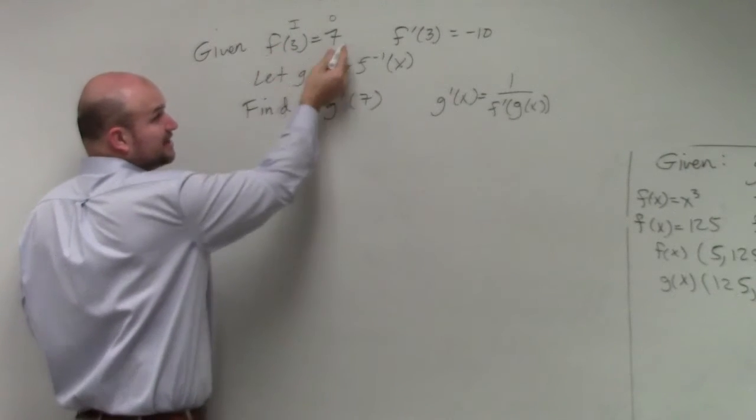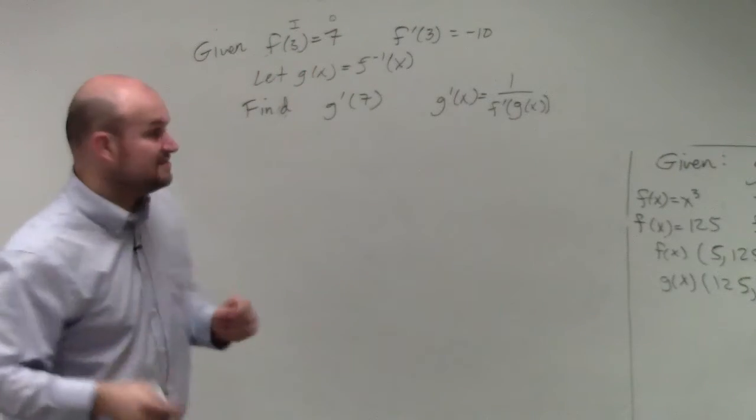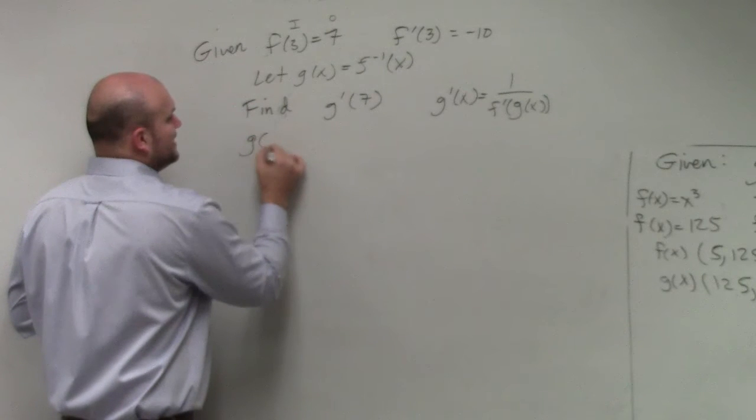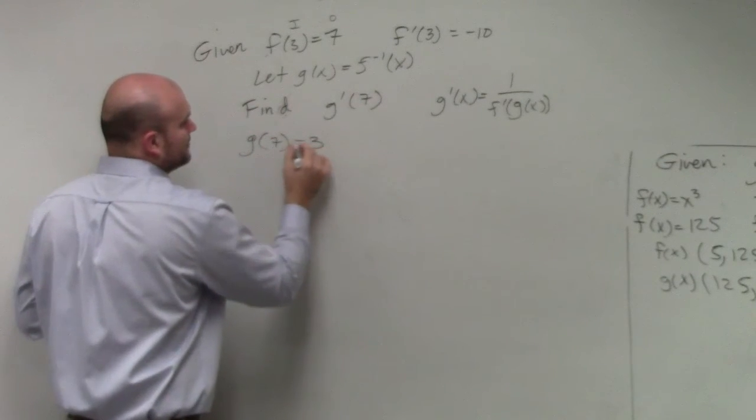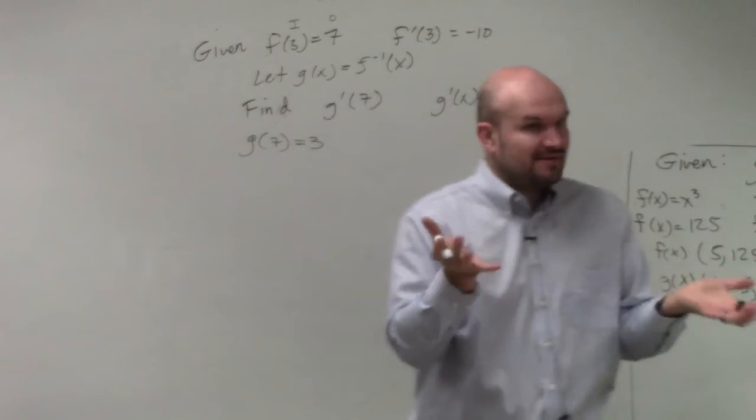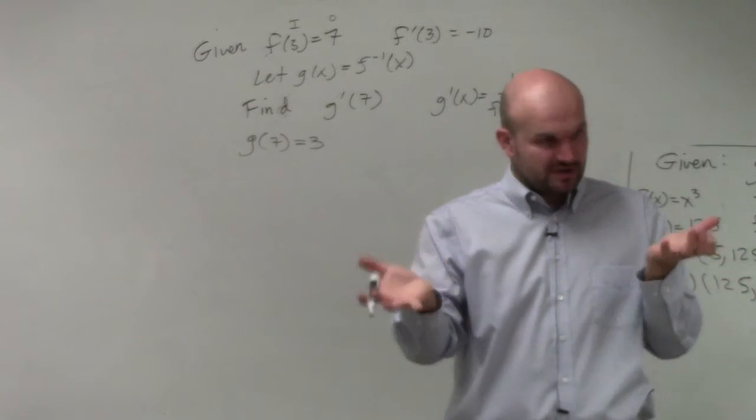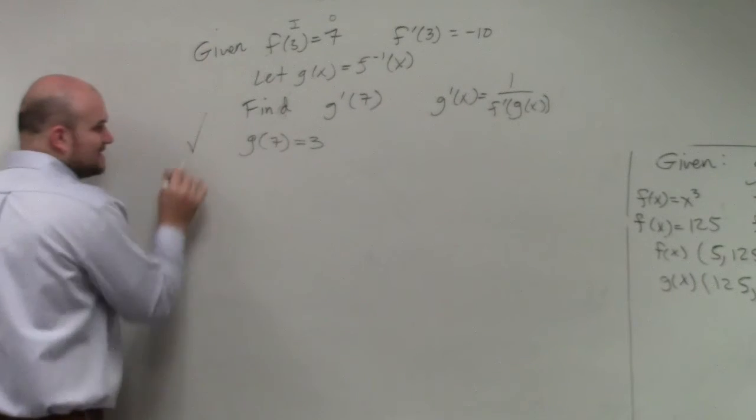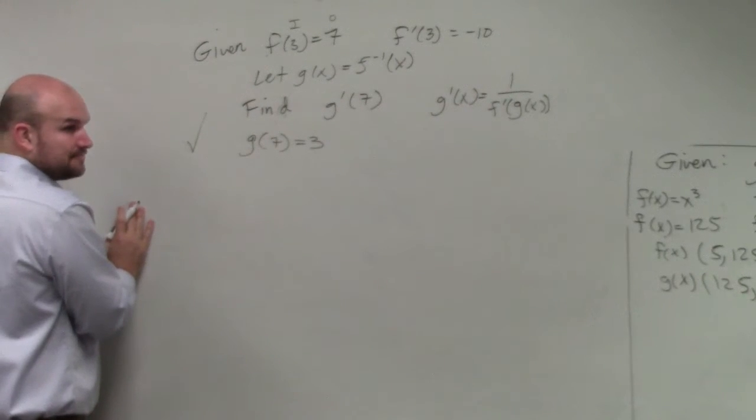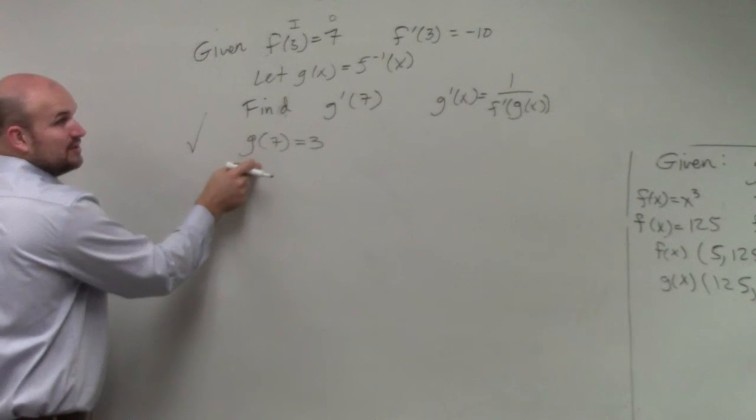We don't know what the function is, but this is very important information because we know that g prime of 7 has to equal 3, right? Because whatever the inverse function, the input and the output are swapped. Does that make sense? So by looking at this problem, that's my first piece of information I'm able to draw out. That's very important, though.